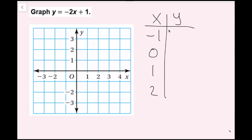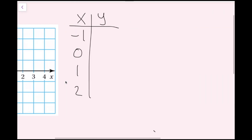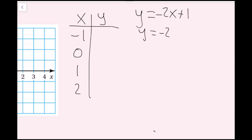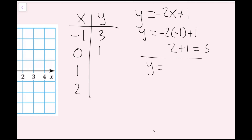Over here I'm going to rewrite my equation y equals negative 2x plus 1. First, I plug in negative 1: y equals negative 2 times negative 1 plus 1. Negative 2 times negative 1 is 2, plus 1 equals 3. So my corresponding y value is 3. For x equals 0, I know that 0 times anything is 0, so the whole term drops out and I'm left with just 1.